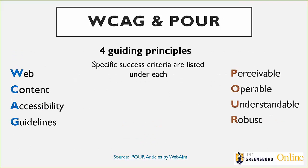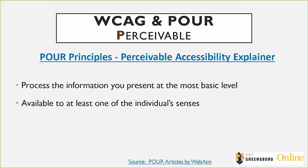There are four guiding principles under WCAG, and there is yet another acronym: POUR. POUR stands for Perceivable, Operable, Understandable, and Robust. Each of these principles has specific criteria listed under it. I'm not going to go into all the different ones, but alternative text falls under Perceivable. I'm going to show a quick video here just to give you an idea.